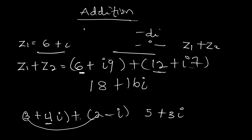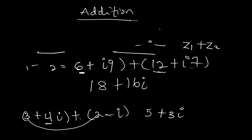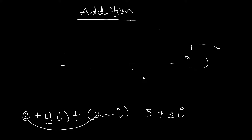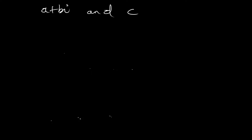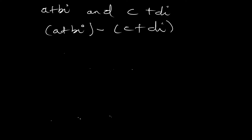How we subtract complex numbers is essentially the same as addition — the only difference is that we subtract instead of add. We subtract the real parts from the real parts and subtract the imaginary parts from the imaginary parts. Given (a+bi) - (c+di):